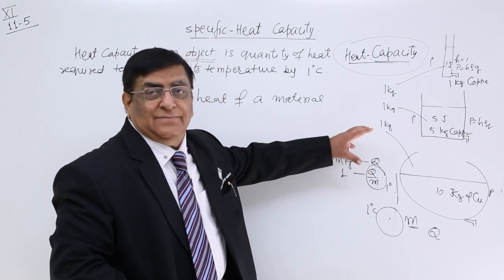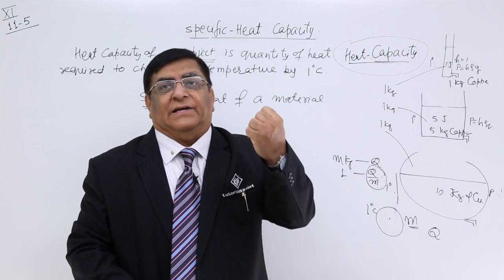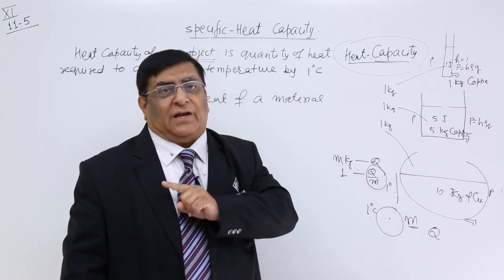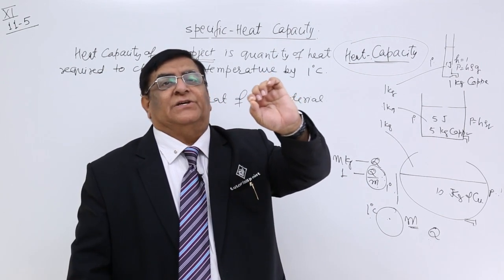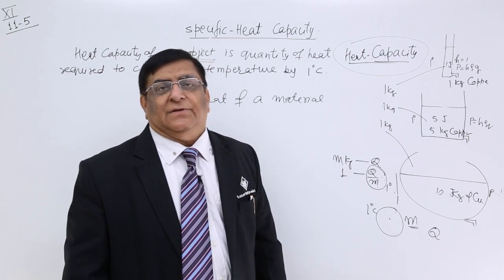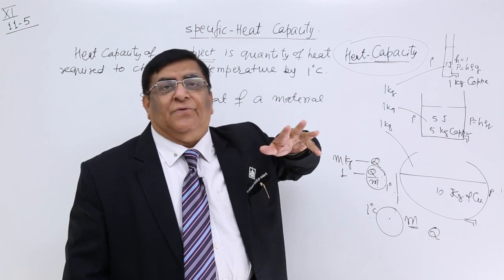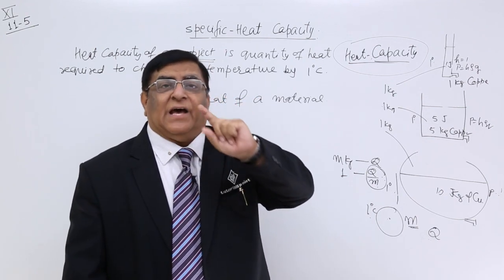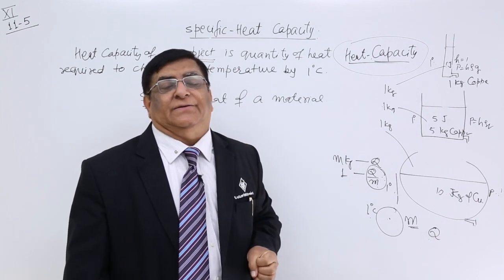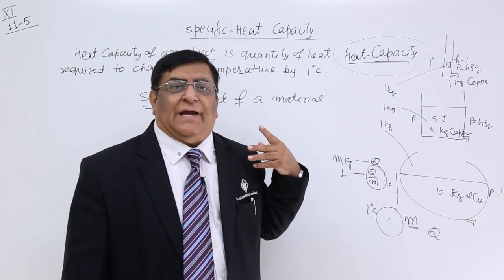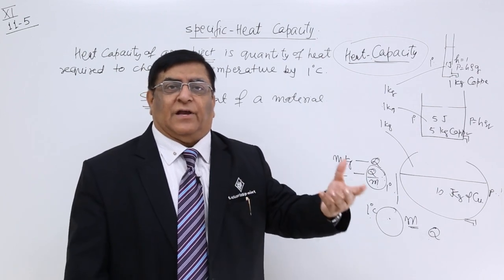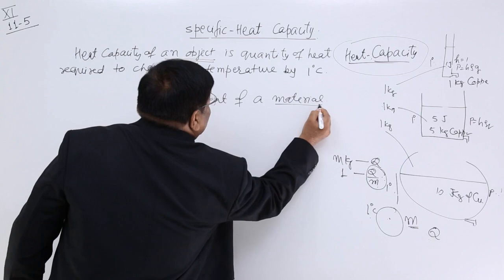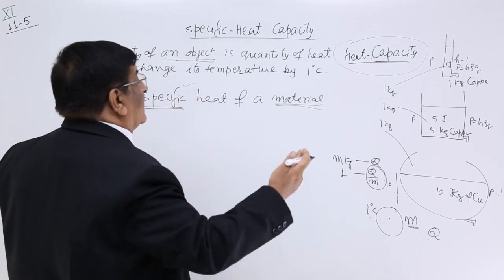I take iron — 1 kg, rise it by 1 degree — whatever heat is taken, that is specific heat of iron. What is the same in all these examples? Every time I calculate heat taken by 1 kg, rising the temperature 1 degree. Because everything is 1 kg, there is no difference of object. The difference is the material. The heat is different because of their nature — one is copper, one is aluminium, one is iron. Specific heat is a characteristic which belongs to the material, not the shape, not the total mass.